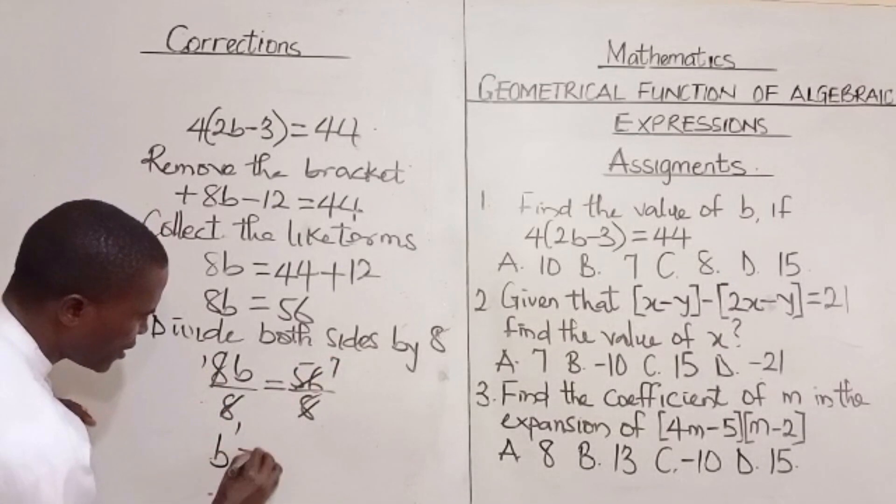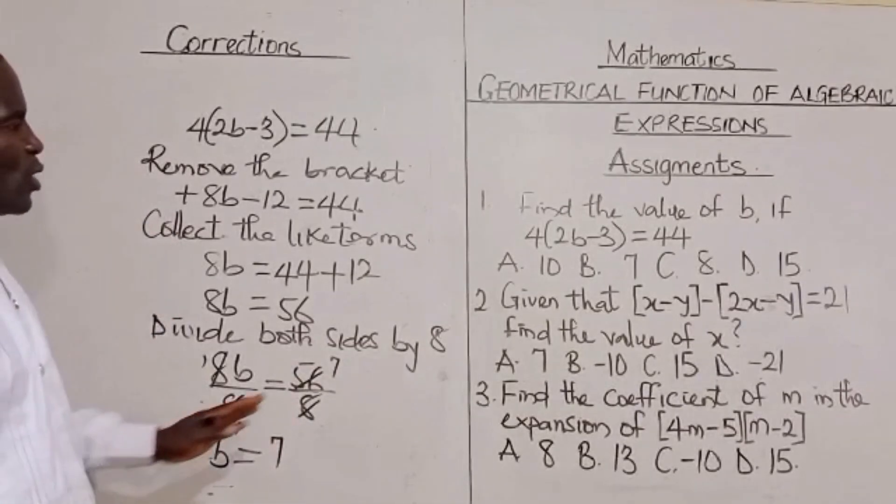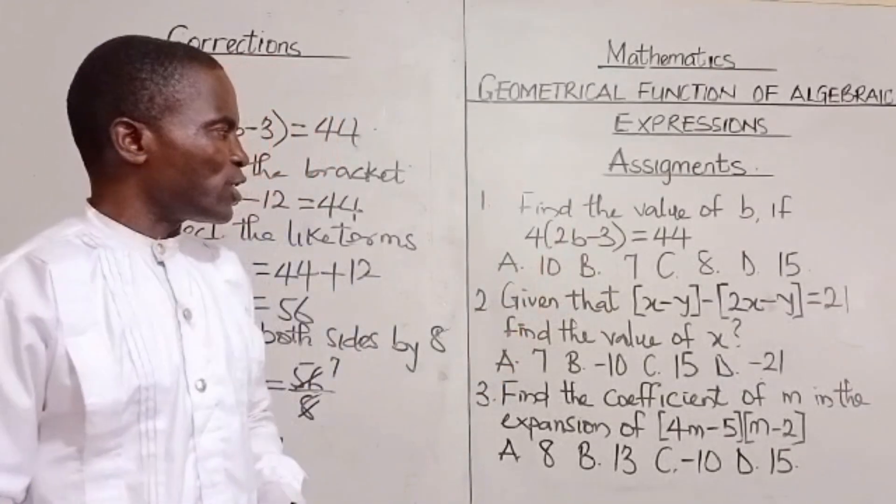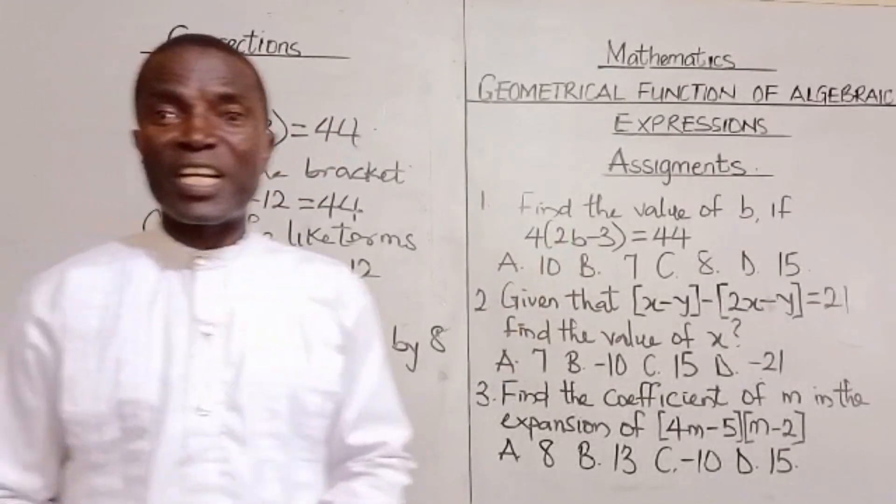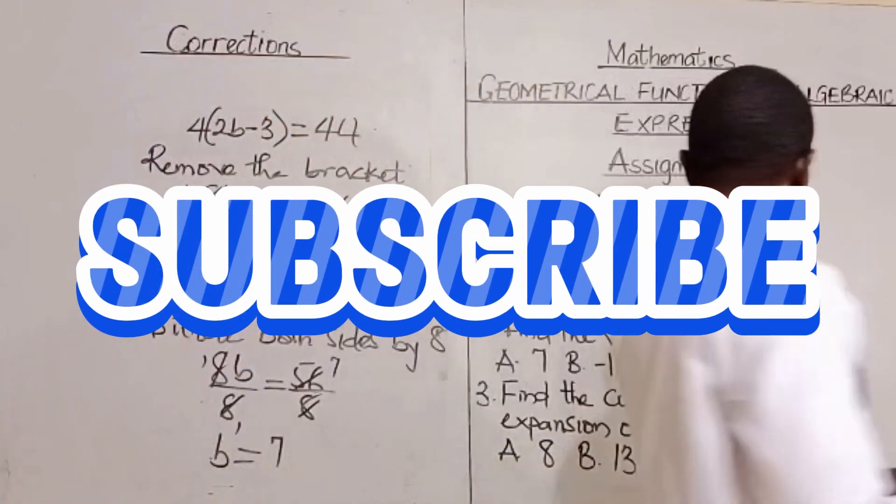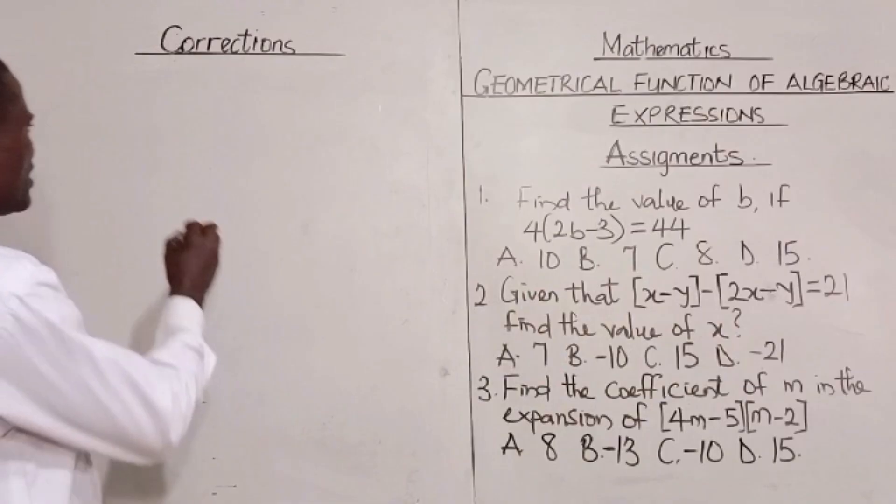And so this 8 cancels this 8. 8 here also you have 7. So b in the final analysis, b is equal to 7. So which of the option is correct? Option B is the most appropriate option. I want to believe it is clear to us.